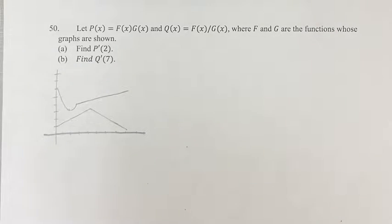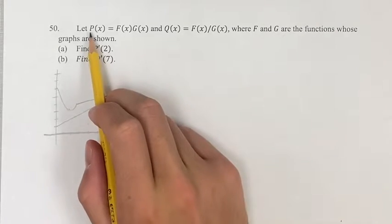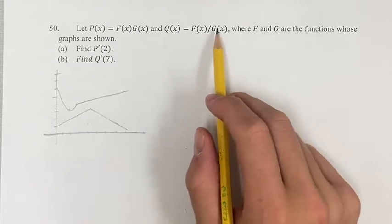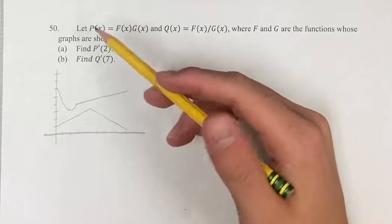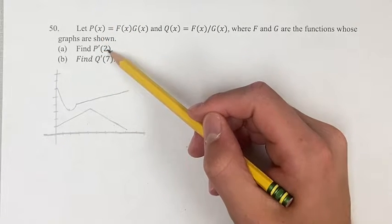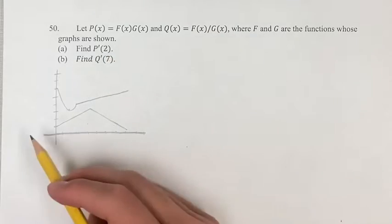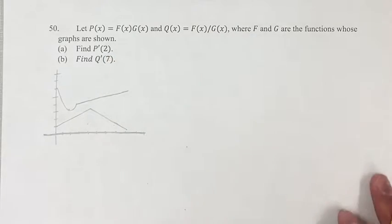Hello, and welcome back to another video. In this problem, we're given that P(x) equals F(x) times G(x), and Q(x) equals F(x) divided by G(x). We're looking to find the derivative of P when x equals 2, and the derivative of Q when x equals 7, given the graphs of F and G that are shown below.